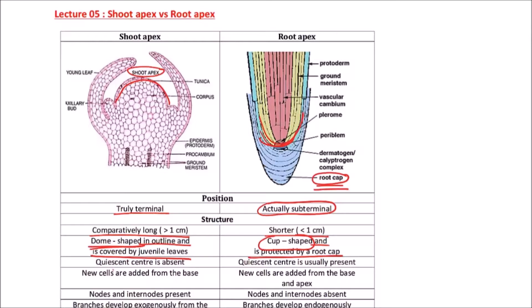The quiescent center is absent in the shoot apex. New cells are added from the base. In the root apex, new cells are added from both the base and apex. Nodes and internodes are present in the shoot apex, but they are absent in the root apex.